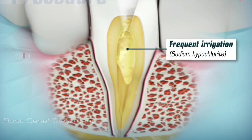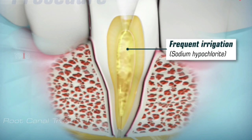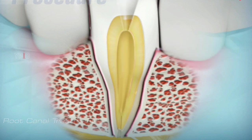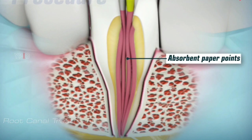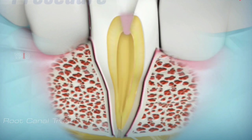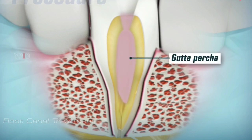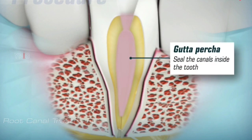Frequent irrigation of the root canals is done using sodium hypochlorite to flush away the debris. Once the entire tooth is completely cleaned, it is dried with tiny absorbent paper points. After the canals have been dried, they are filled with a rubber-like substance called gutta percha. The purpose of this filling material is to seal the canals inside the tooth.